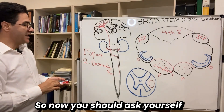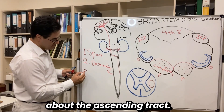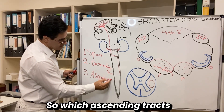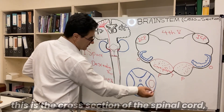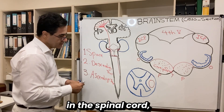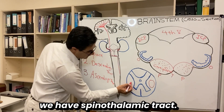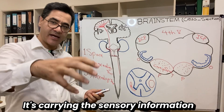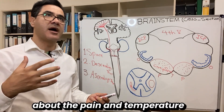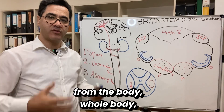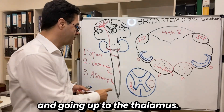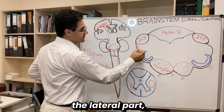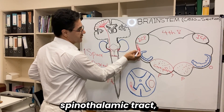Now you should ask yourself about the ascending tracts: which ascending tracts do we have at this level? In the spinal cord, the lateral column contains the spinothalamic tract. The spinothalamic tract is an ascending tract carrying sensory information about pain and temperature from the whole body — except the head and face — going up to the thalamus. You can find the spinothalamic tract in the lateral part.